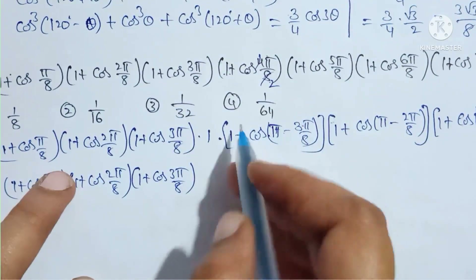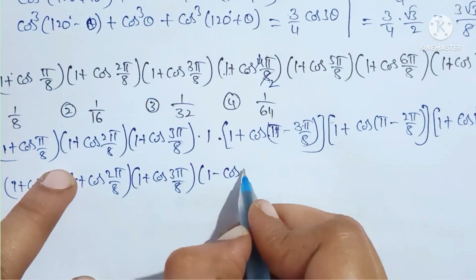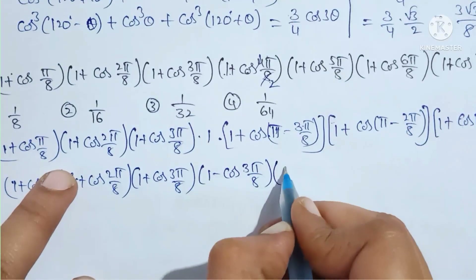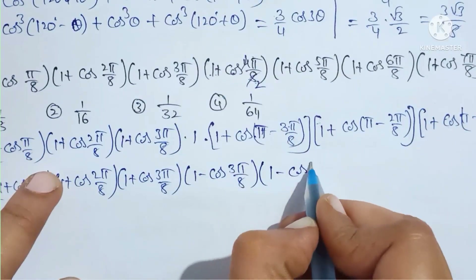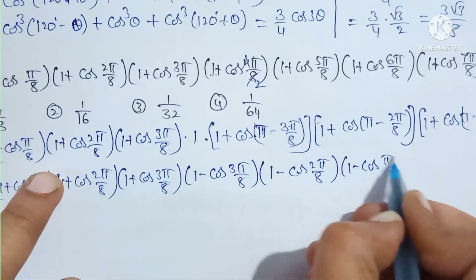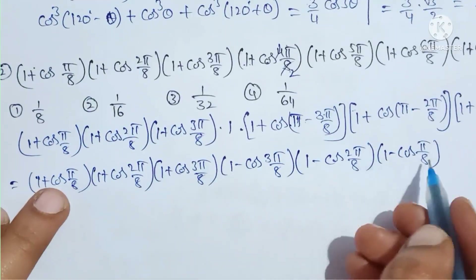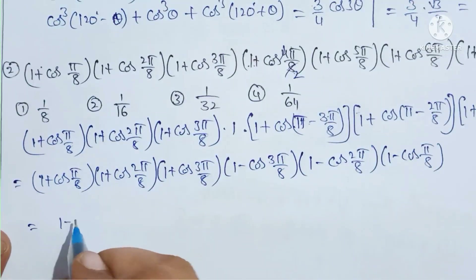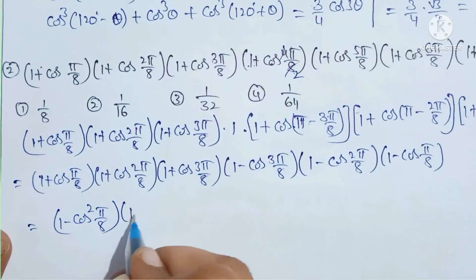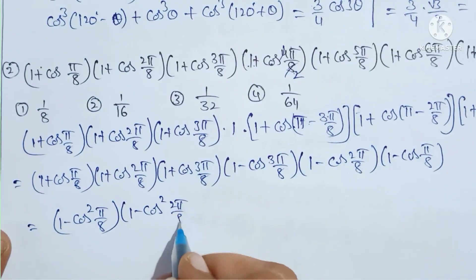Applying the second quadrant rule: cos(π - x) = -cos(x). So we pair terms: (1 + cos(π/8))(1 - cos(π/8)) and (1 + cos(3π/8))(1 - cos(3π/8)). Using the identity (A + B)(A - B) = A² - B², these become (1 - cos²(π/8)) and (1 - cos²(3π/8)).